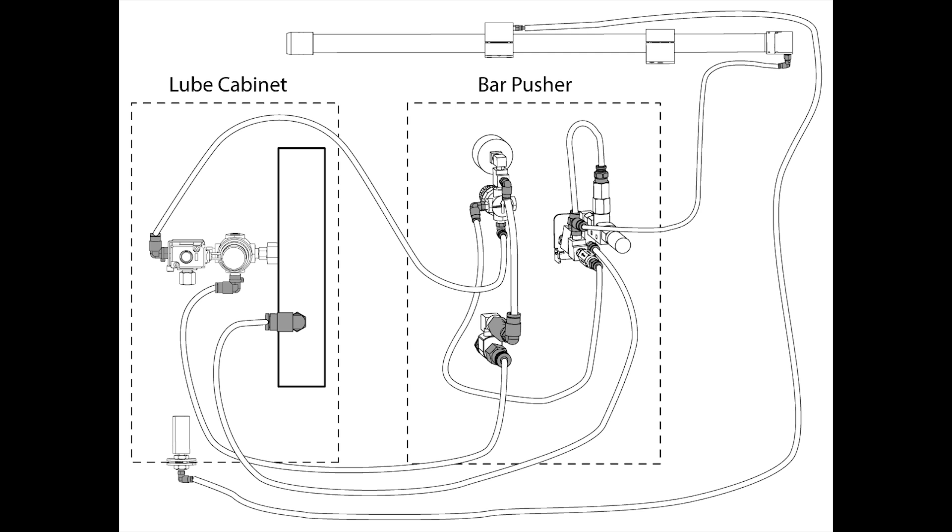When you press the retract switch, air at full line pressure blows across an orifice, creating a vacuum, pulling the piston back to its original position.